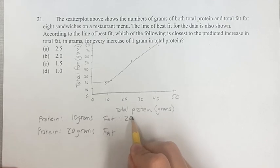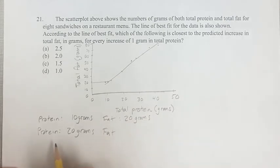So the fat is going to be 20 grams when the protein is 10.